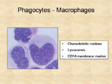The other phagocytic cell is the macrophage. Morphologically, it is a mononuclear cell with a characteristic kidney-shaped nucleus. These cells don't contain specific granules but have numerous lysosomes with similar contents to neutrophil granules. The marker used to identify macrophages is CD14, a surface antigen detectable with antibodies.